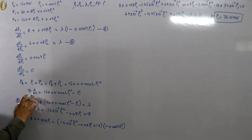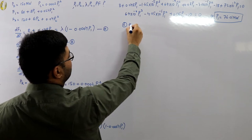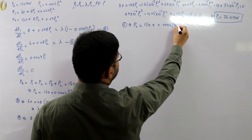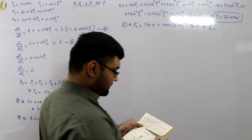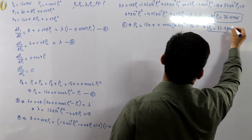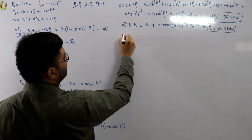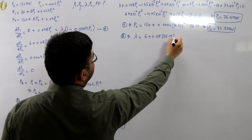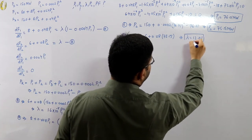With P1 = 76.01 MW, substitute back into equation C (the P2 expression): P2 = 150 + 0.0002 × (76.01)² − 76.01, giving P2 = 75.15 megawatts. Then from equation B: lambda = 6 + 0.08 × 75.15 = 12.01 rupees per megawatt-hour.